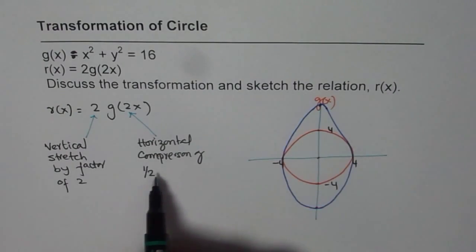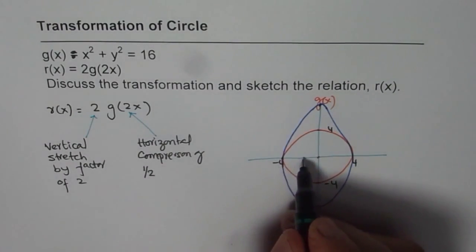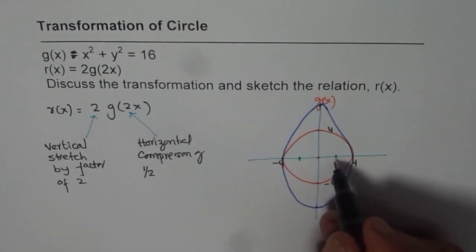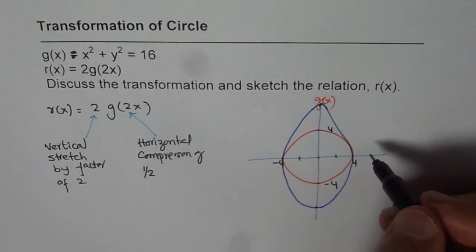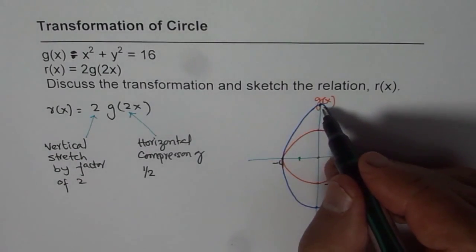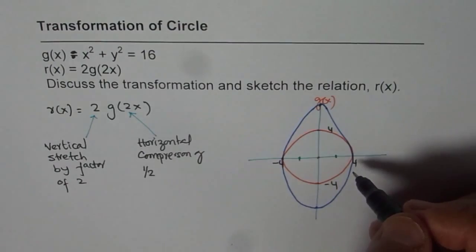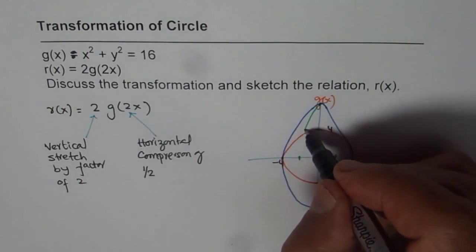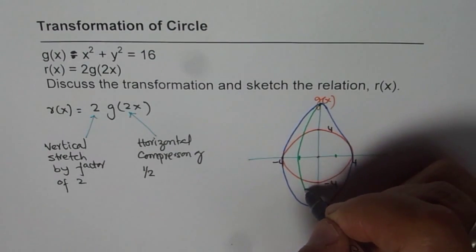Now let us do compression by a factor of half. That means this point will move to minus 2 and the other will move to plus 2. 0 times half is 0. So it remains, the x value remains 0. The y value will of course be 8. We are just changing horizontal points.